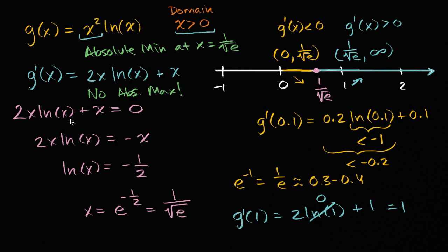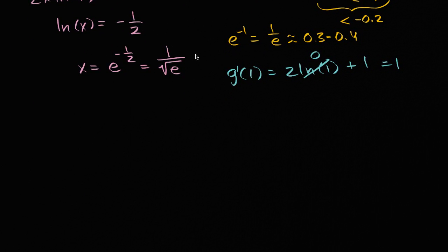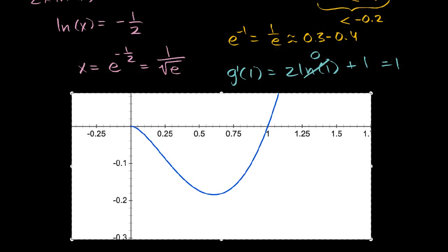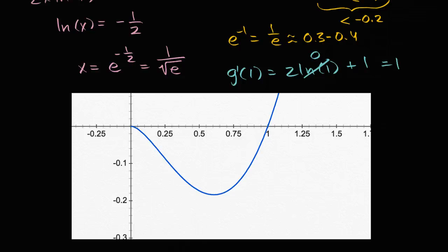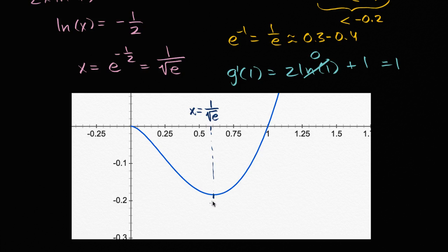Now let's look at the graph to confirm what we just did analytically. Looking at the graph of our function, this point right here is x equals one over the square root of e, and we can see it is indeed an absolute minimum. And there is no absolute maximum — the function takes on arbitrarily high values.